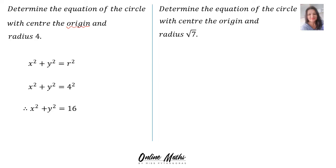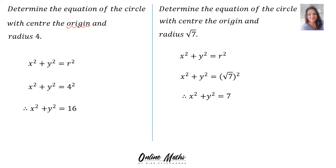Example 2: Determine the equation of the circle with center at the origin and radius √7. The correct formula to use is x² + y² = r². In r's place, we substitute √7, and then (√7)² = 7. Therefore, the equation is x² + y² = 7.